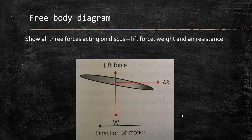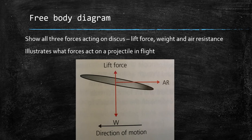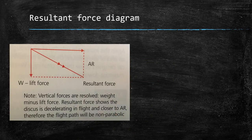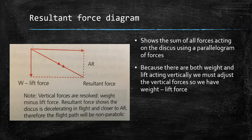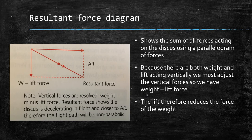A free body diagram shows all three forces acting on the discus: weight, air resistance, and lift force, which is a vertical force — illustrating what forces act on a projectile in flight. The resultant force diagram uses the parallelogram to show the sum of all forces. Because there is lift acting on the projectile as well, the weight arrow is shorter than it would be for a shot put — that arrow actually demonstrates weight minus lift force, and that's what you label it as. Therefore, the lift reduces the effective force of the weight, showing the overall effect of an aerofoil in flight.